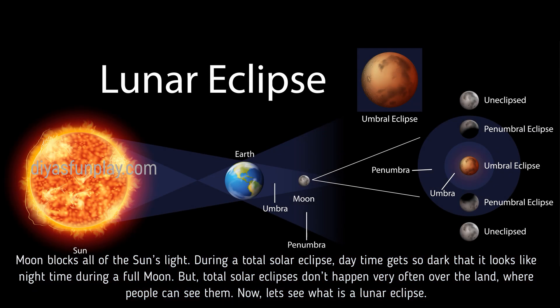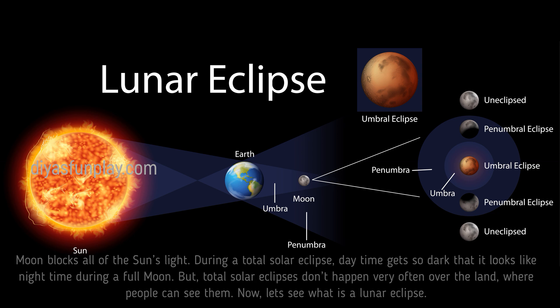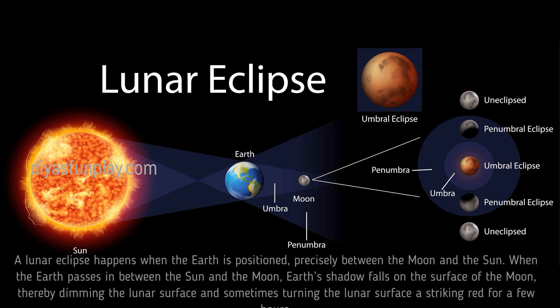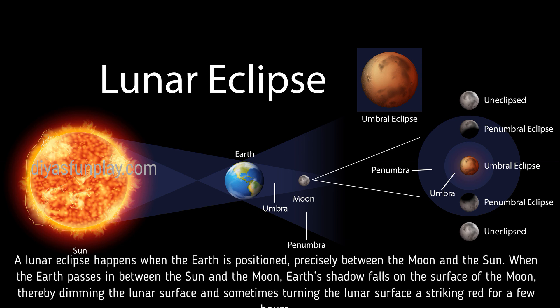Now let's see what is a lunar eclipse. A lunar eclipse happens when the Earth is positioned precisely between the moon and the Sun.